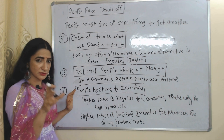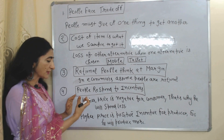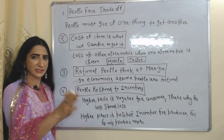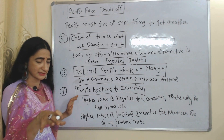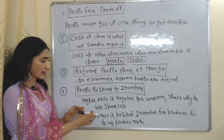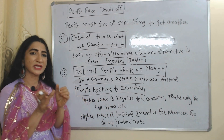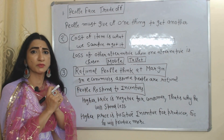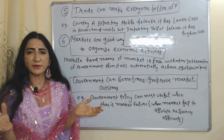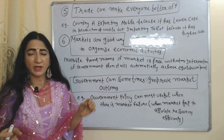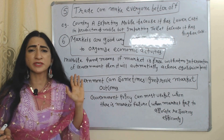The next principle is people respond to incentives. This is true — people respond to incentives. For example, a higher price is a negative incentive for the consumer, that's why they will consume less. But this same higher price is a positive incentive for the producer, that's why they will produce more.